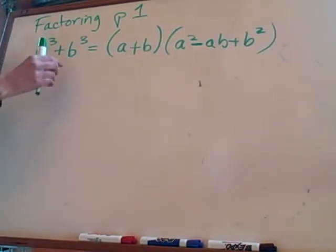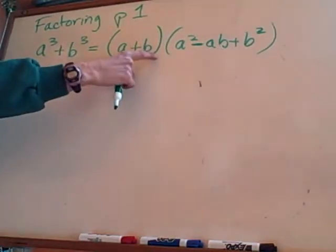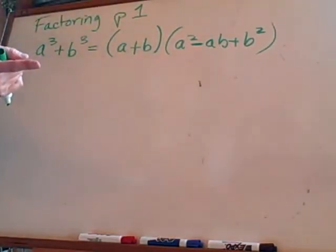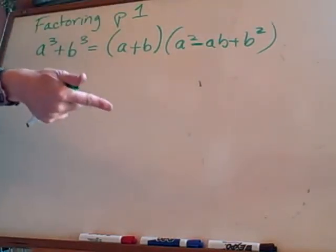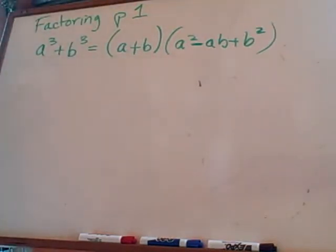The easiest way for me is if you're doing a sum of perfect cubes, then it's a plus b and you're going to have one minus. If you're doing the difference, it's going to be a minus b and then you're going to have all pluses. But, you know, work it out however you need to.